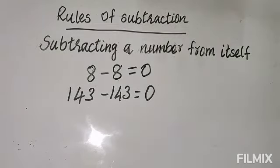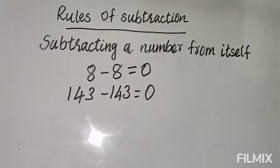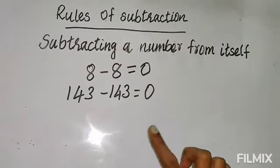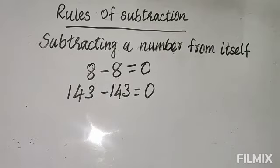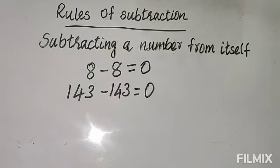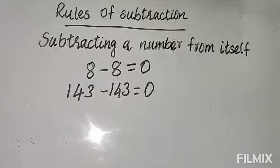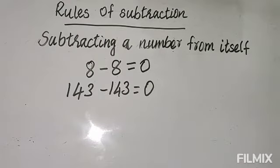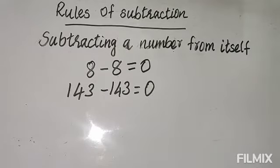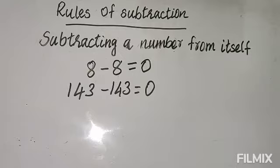Let me remind you the three rules. First: when you subtract 0 from any number, the difference is the number itself. Second: when you subtract 1 from any number, the difference is the predecessor of the number. Third: when you subtract a number from itself, the difference is 0. If you remember these three rules, you can avoid a lot of calculation and directly write the answer. This can also be asked in exams as fill-in-the-blanks.